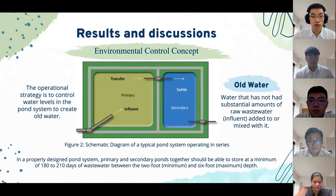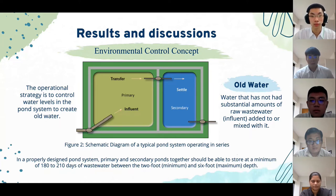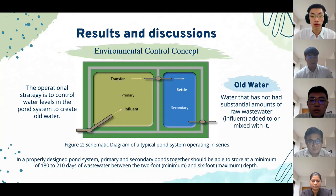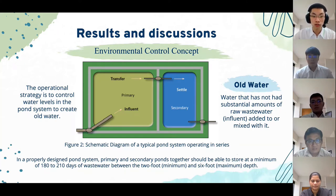The operational strategy is all about controlling water levels in the pond system to create 'old water' — water that has not had substantial amounts of raw wastewater added to or mixed with it. In a properly designed pond system, primary and secondary ponds together should be able to store a minimum of 180 to 210 days of wastewater, between a minimum of 2 feet and maximum of 6 feet depth. To improve the efficiency of creating old water, an example of a pond system operating in series, as shown in this slide, is applied.